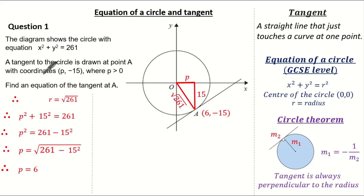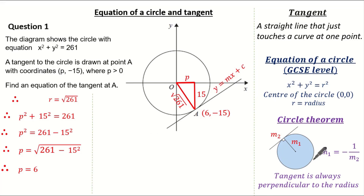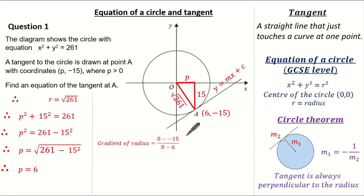The question wants us to find the equation of the tangent at A. We know a tangent is a straight line and it will be in the form y equals mx plus c. We have information about the radius, and using the relationship between the gradient of the radius and the tangent, we can work out the gradient of the radius from the centre to A — it's simply the difference in y coordinates over the difference in x coordinates.